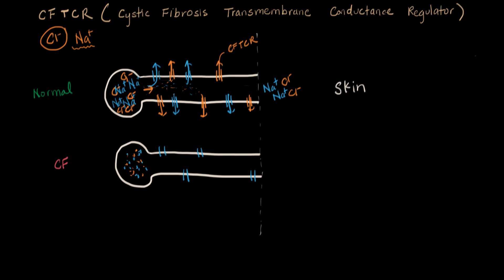However, this time, the CFTCR gene is not working, so the chloride channels are all messed up. So they look like this. It's not open. So as the chloride floats down this way, it can't leave. You see, it just has to stay in here, and it keeps going towards the skin.